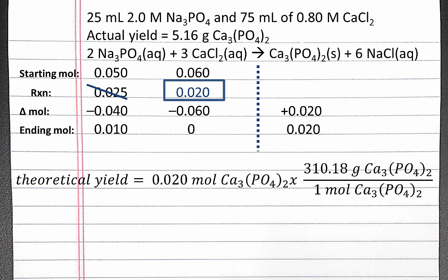Next, we can calculate the theoretical yield for calcium phosphate, which is converting our 0.02 moles of calcium phosphate into grams of calcium phosphate. When we put the numbers into our calculator, we should get 6.2 grams of calcium phosphate.